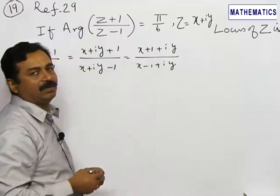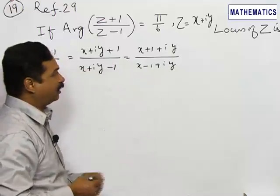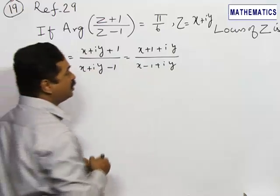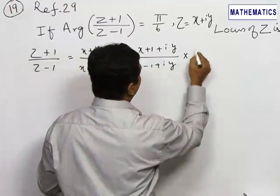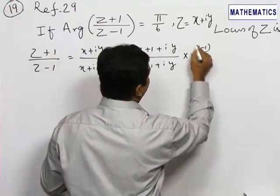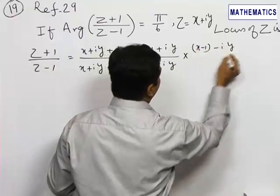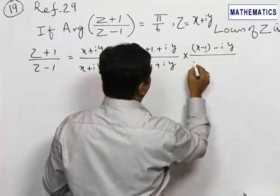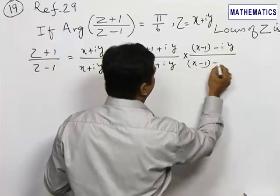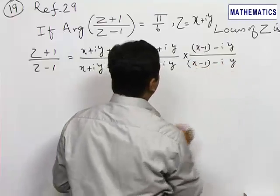We will remove i from the denominator by multiplying by its conjugate: (x-1-iy) times (x-1-iy).